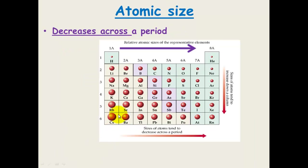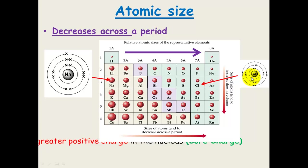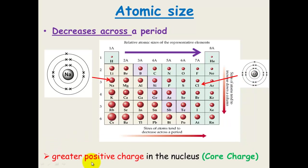As you go across a period, atomic size decreases, and there's a reason for that. If you look at sodium, which is in period three, it's going to have a larger radius than chlorine. This is due to a greater positive charge, known as the core charge, which I'm going to explain in detail.